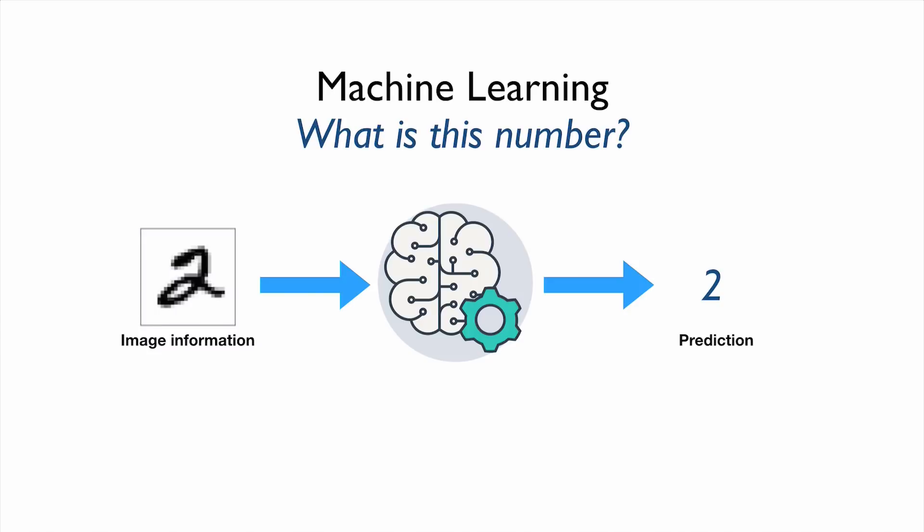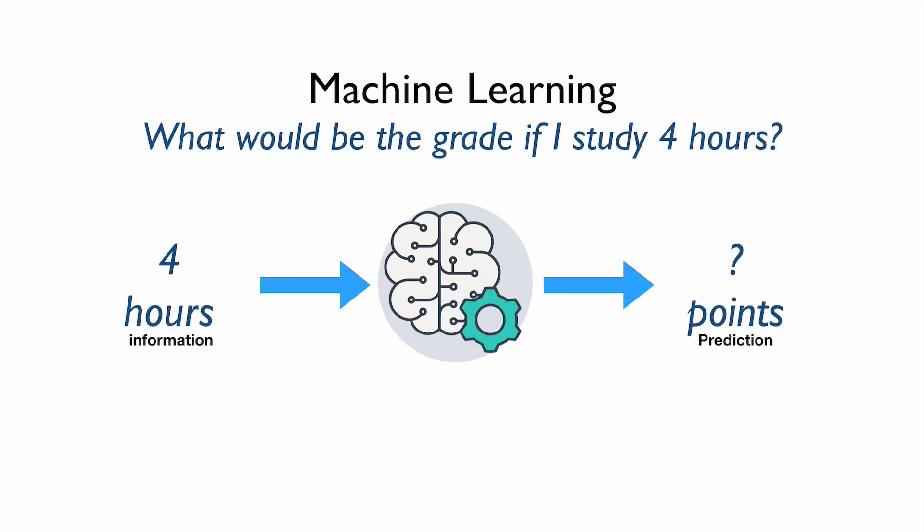And then this number, in the same manner, we're going to provide this information to this machine, and this machine can predict what is the number in this image. Also we're going to provide the information about how many hours they studied, and then this machine can tell us what would be the points they might get. This is one example of machine learning.